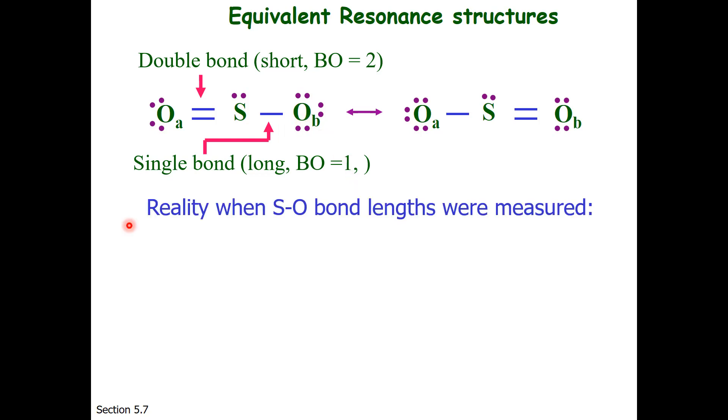Reality, when the sulfur-oxygen bond lengths were measured, was that they found two bonds of medium length, the exact same length, and that length compared to other compounds was midway between a bond order of one and a bond order of two.